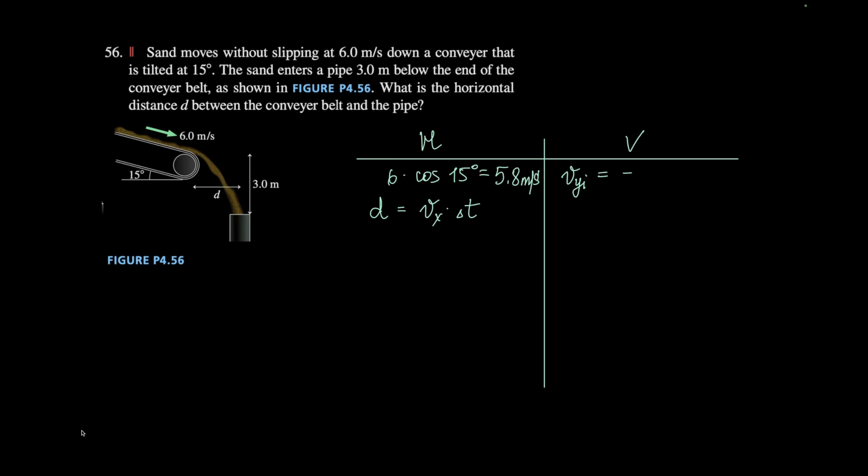It is negative because it's below the horizontal. 6 sine of 15, sand enters the pipe 3 meters below the end of the conveyor belt. So therefore, I also know that my change in y is negative 3.0 meters, and I know that g is negative 9.8 meters per second. Guess what?